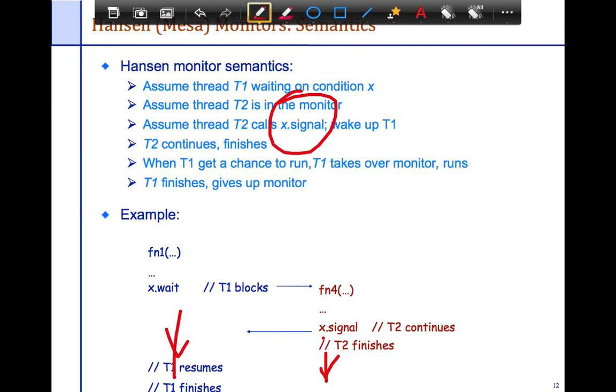So T1 waits. It gets a chance to run at some point in the future. It takes over the monitor by checking the condition again, and then it runs. And then T1 finishes, but in the meantime, T2 could continue to run. It could do whatever. It could even notify and then not release the lock. It has the option.